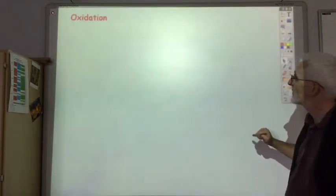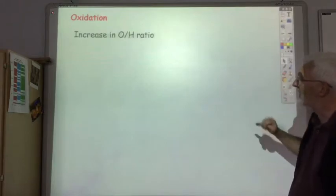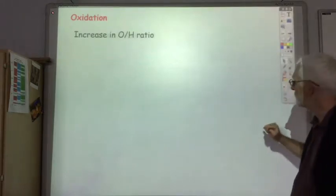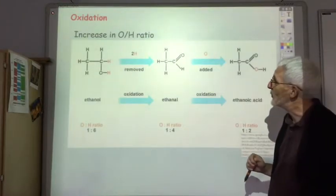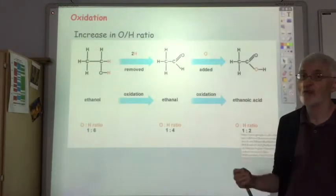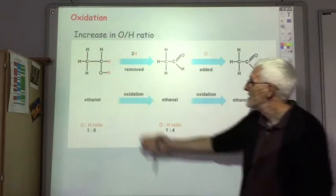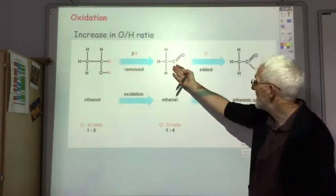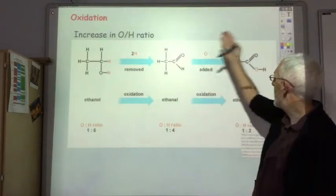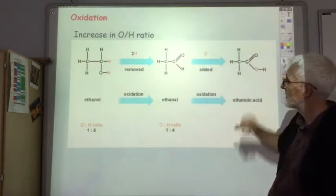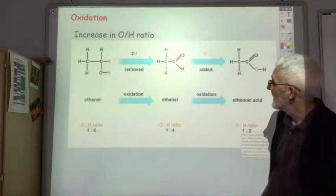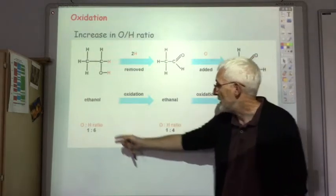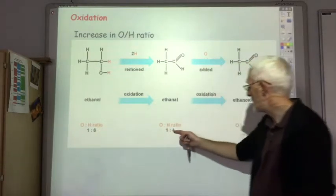Oxidation we've come across before. In terms of organic chemistry it's when you get an increase in oxygen to hydrogen ratio. We mainly came across it in the oxidation of alcohols, so here we see an alcohol, a primary alcohol being oxidized to aldehyde which can be further oxidized to carboxylic acid. And as you see that oxygen to hydrogen ratio increases from one over six to one over four to one over two.